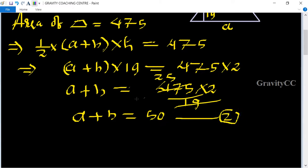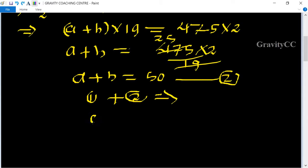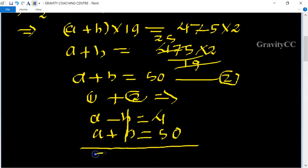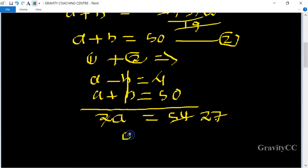Now adding first and second equations we get a minus b equal to 4 and a plus b equal to 50. b and minus b cancel, so 2a equal to 54. Cancel by 2, 27. So a equal to 27.